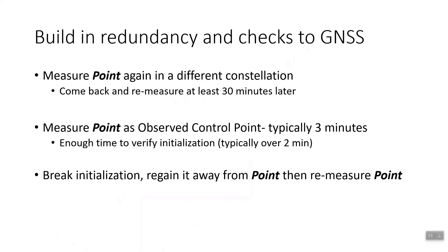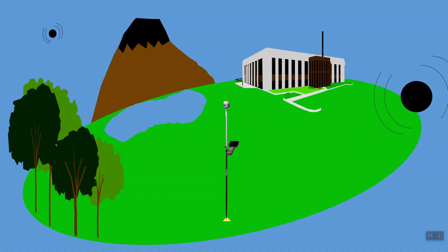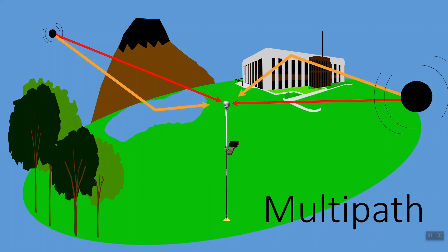I always say re-initialize away from the point — there's something called multi-path. The satellite signal can bounce off of something before it comes to the receiver. So you don't want to set up your rover on a section corner and let it initialize while it's sitting there, because if you were getting multi-path, you'll still be getting that repetitive distance, but it's repeating the wrong distance. That's why I always recommend you're moving the receiver when it's initializing, and when you do break initialization, don't do it while it's sitting level on the point.